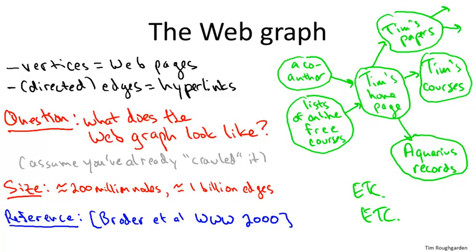Broder et al wanted to give some answers to the question: what does the web graph look like? They asked what's the most detailed structure we can get about this web graph without doing an infeasible amount of computation, really just sticking to linear time algorithms. We've seen that you can compute strongly connected components in linear time with small constants. That's one of the major things they did in this study.